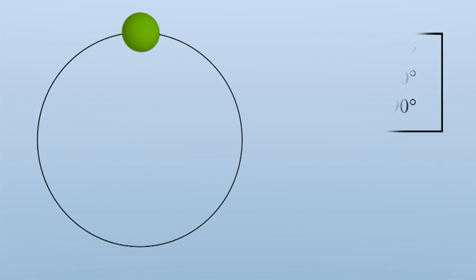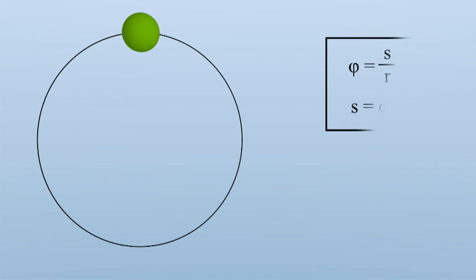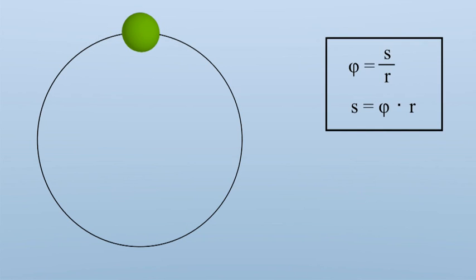To compute the outer distance of a circle, the formula phi equals s over r is quite helpful. Rearranging the equation provides the circumference of a semicircle of 180 degrees, or mathematically 1 times pi. Assuming that the circle has a radius of 1, the circumference has the length of 1 times pi.